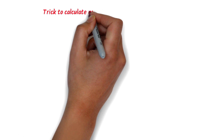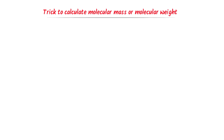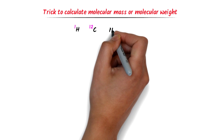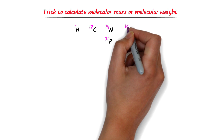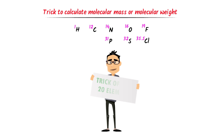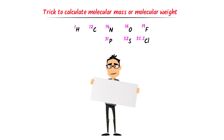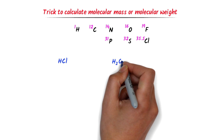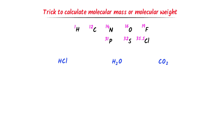Now let me teach you the super easy trick of calculating molecular mass or molecular weight. Firstly, I'll write some common non-metals — hydrogen, carbon, nitrogen, phosphorus, oxygen, sulfur, fluorine, chlorine, and bromine — along with their respective atomic masses. If you want to learn the super easy trick of memorizing the first 20 elements of the periodic table with atomic numbers and atomic masses, watch our video; its link is given in the description. Now consider these molecules and find their respective molecular masses.